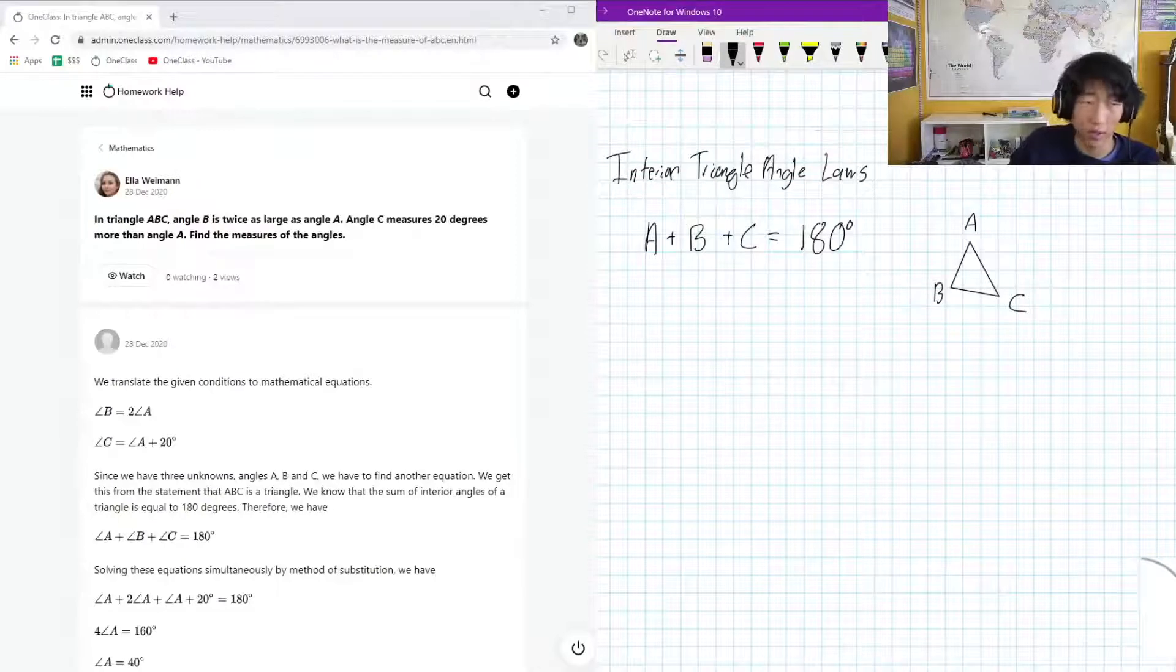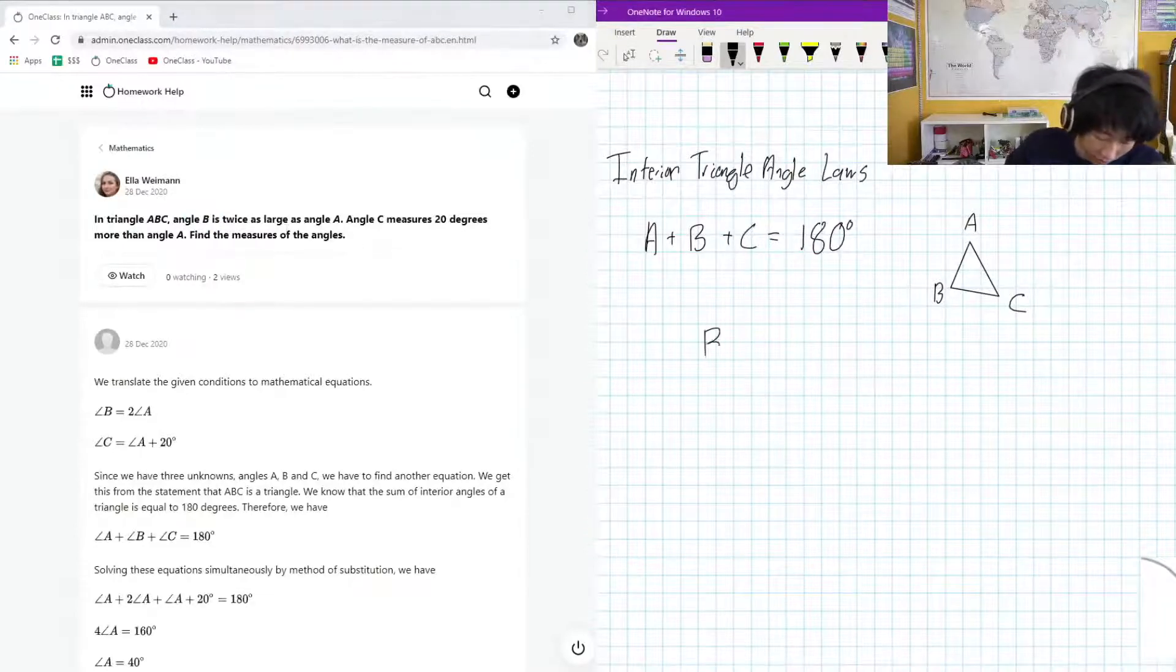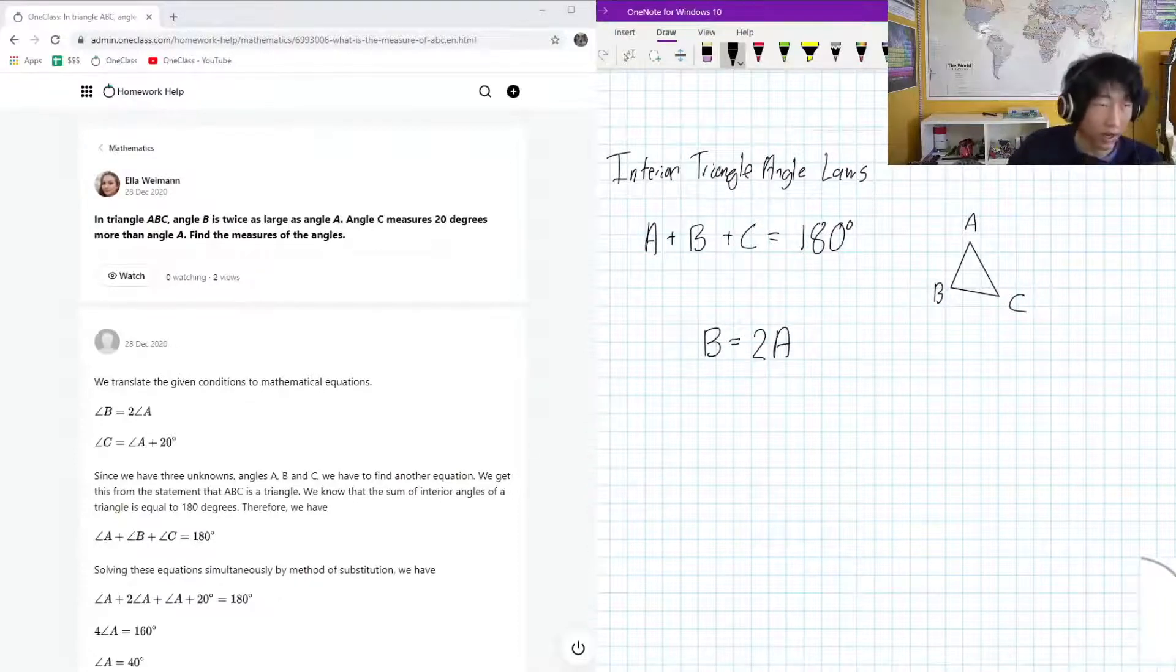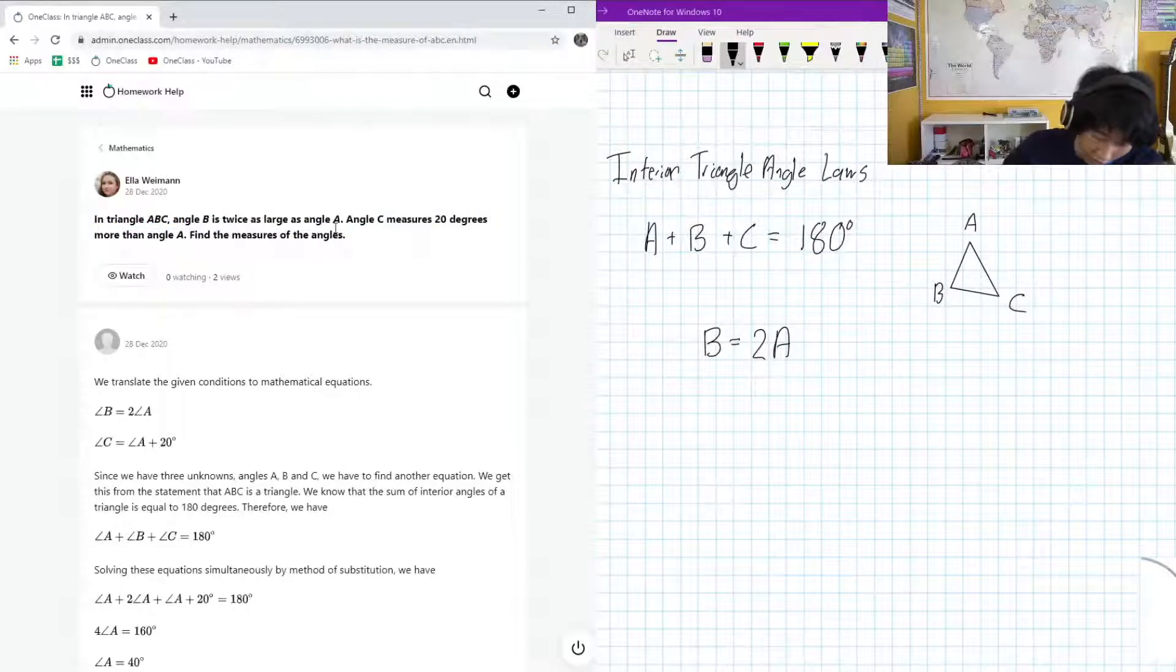Now what else does the question tell us? The question also tells us that angle B is twice as large as angle A, which means that B is equal to 2 times A. That's another thing to keep in mind. And another thing that they told us about angle C is angle C is 20 degrees more than angle A, so C is equal to A plus 20 degrees.